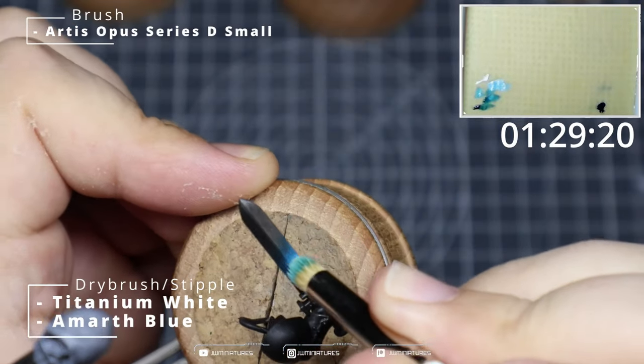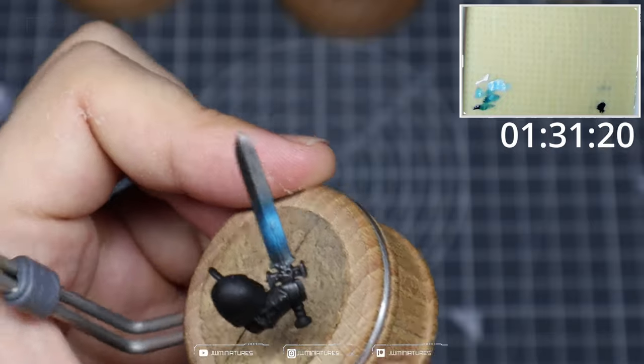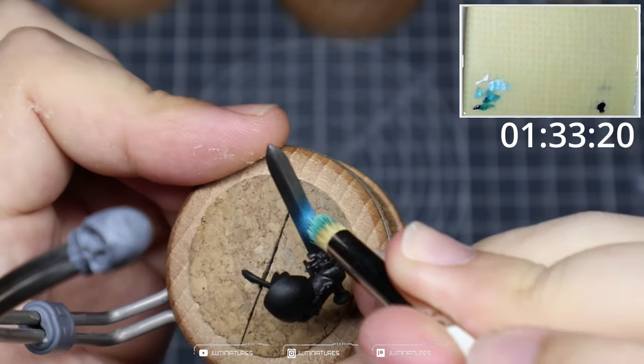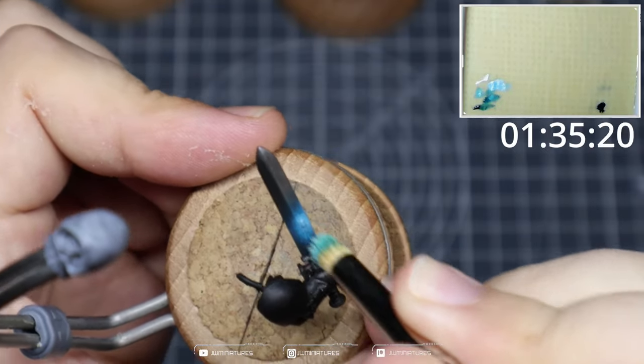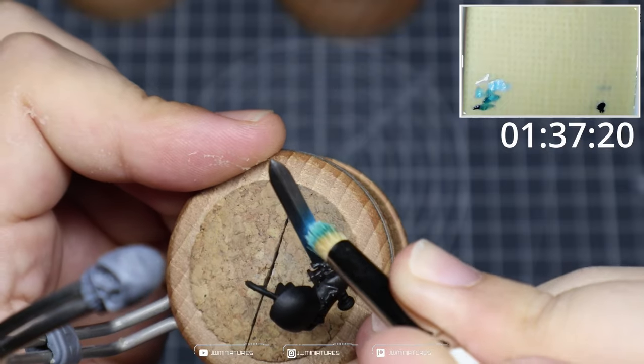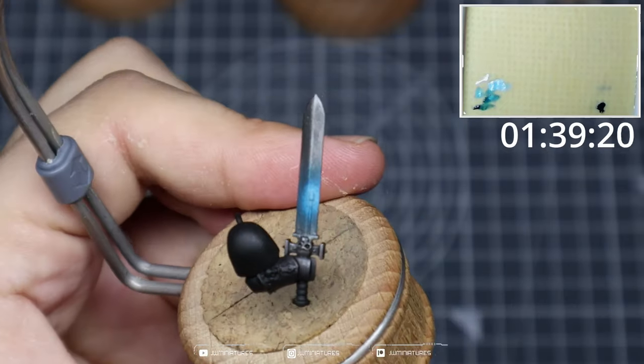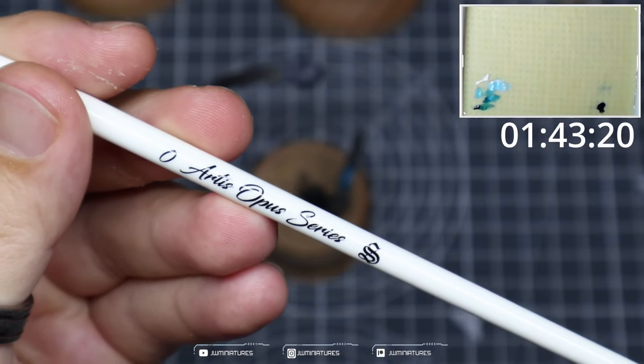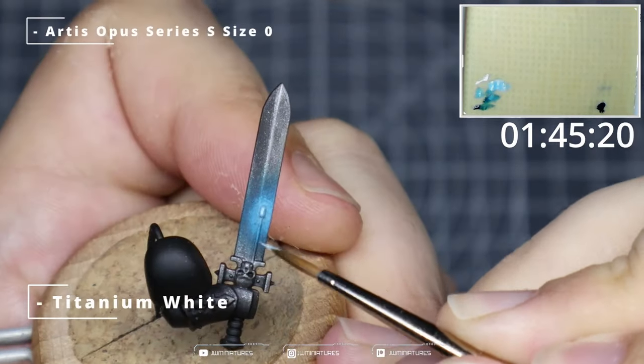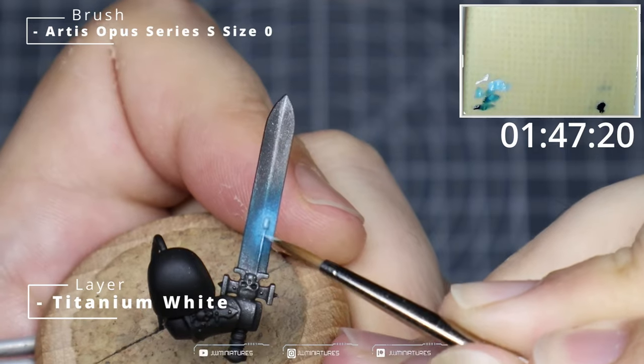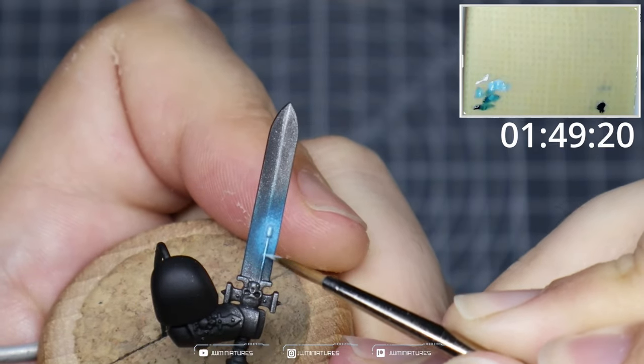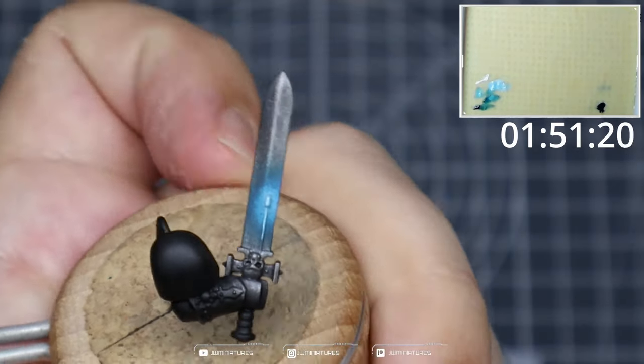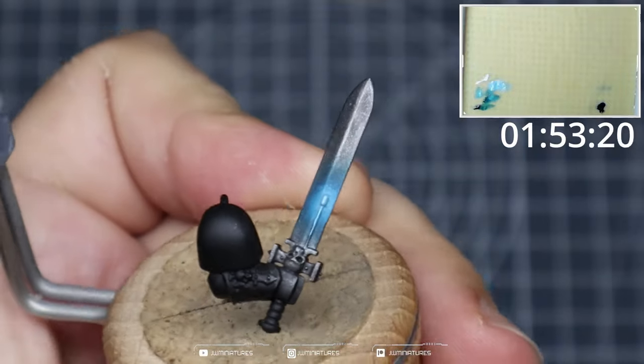Adding some Titanium White into your mix, you're just going to focus on the tip of the power rod this time, just stippling in that bright point. Finally we're just going to grab a standard size zero Artist Opus here and we're just going to highlight up the shaft and the tip of the power rod, and that creates a nice simple dry brushed version of a power sword.